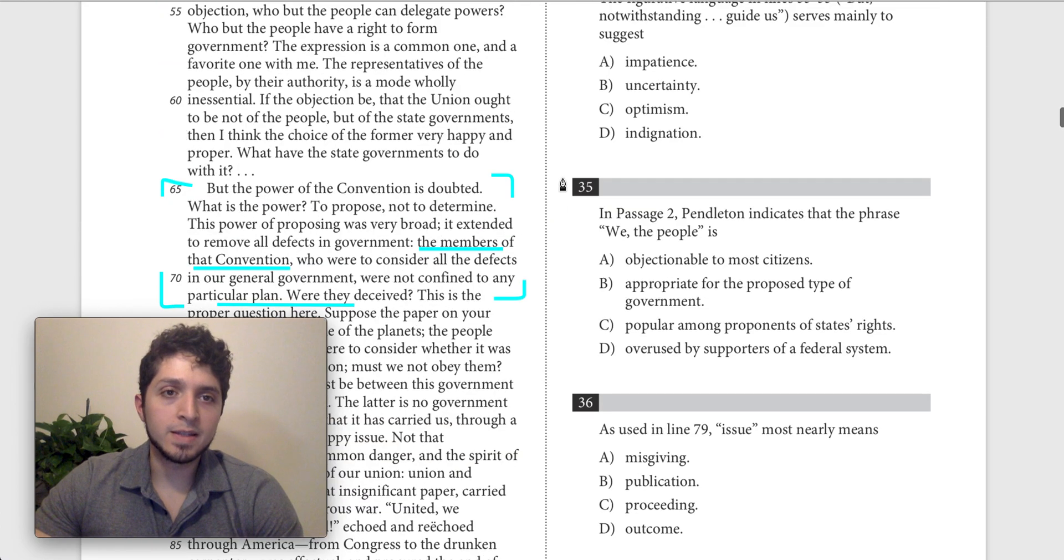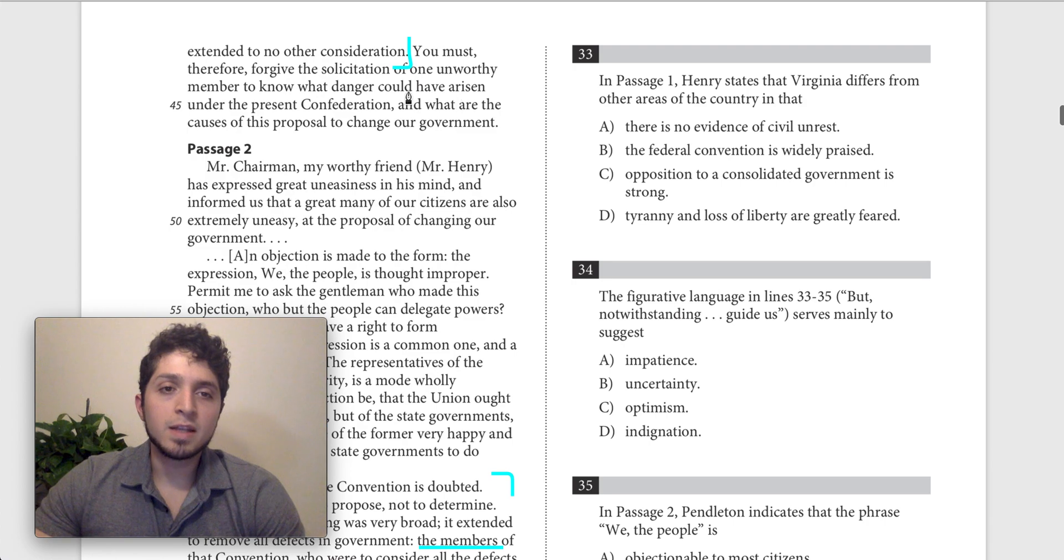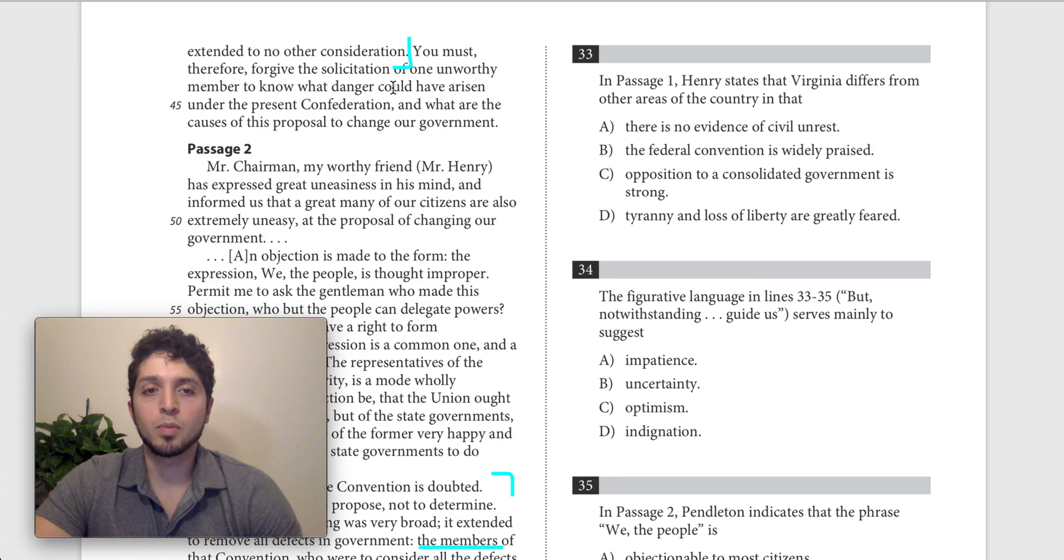Then we have 42 through 46, which says, you must therefore forgive the solicitation of one unworthy member to know what danger could have arisen under the present confederation, and what are the causes of this proposal to change our government.